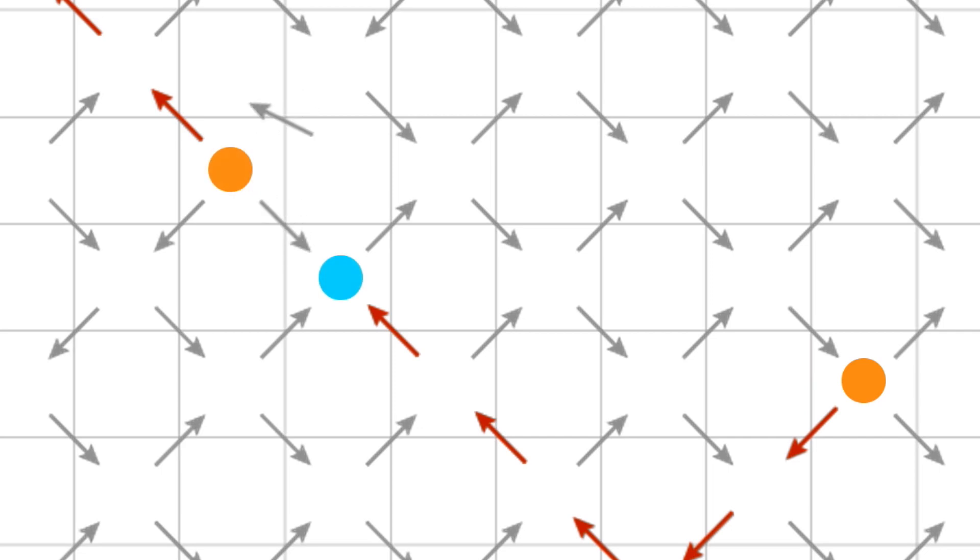If the upper right spin flips, all four spins around the south monopole will point out. This creates a double-charged south monopole and another north magnetic monopole, but nothing will have moved.